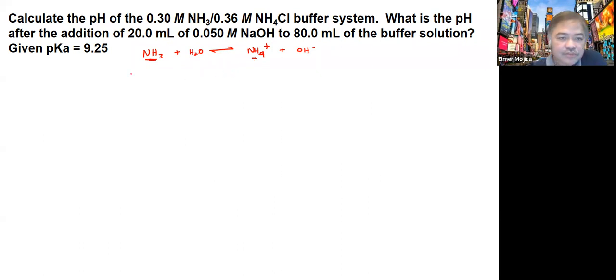Now to solve for the pH initially, we use the Henderson-Hasselbalch equation. We have pH equals to pKa plus log, the concentration of the base over the concentration of the acid. We're given 9.25.